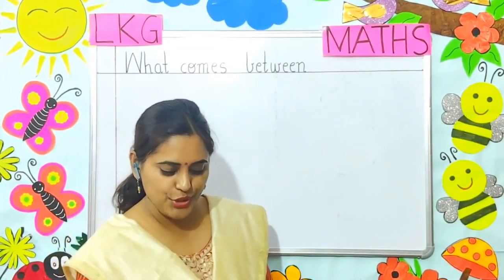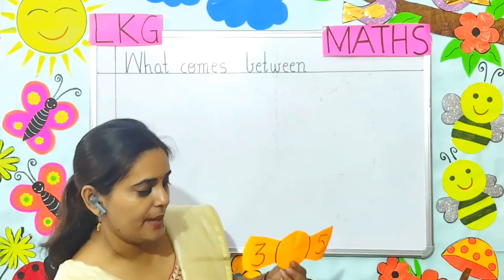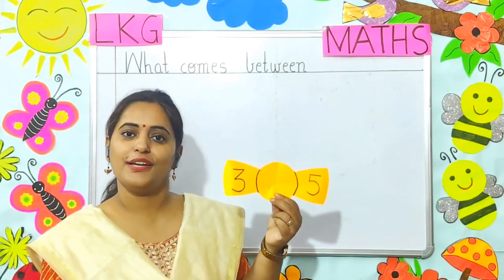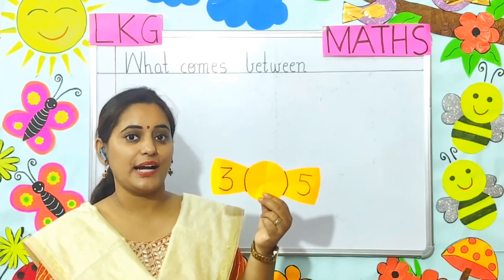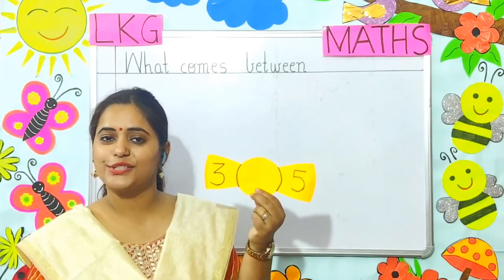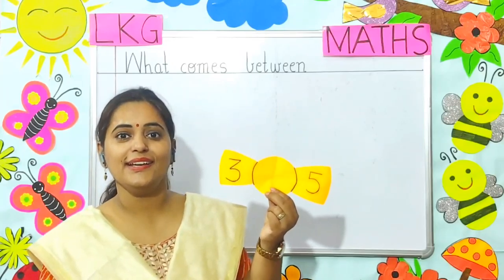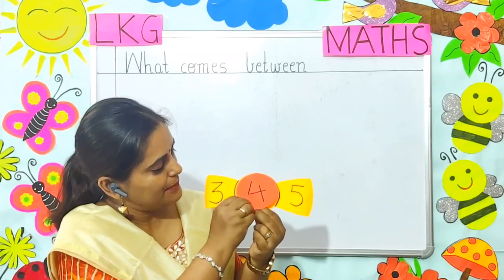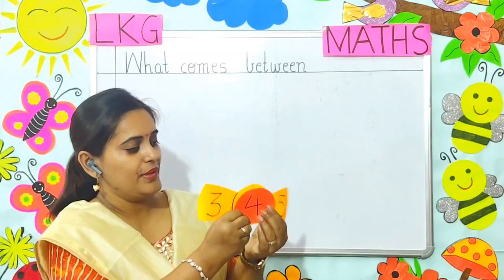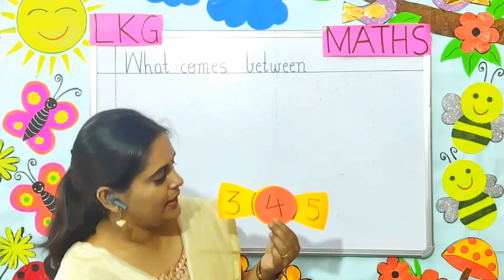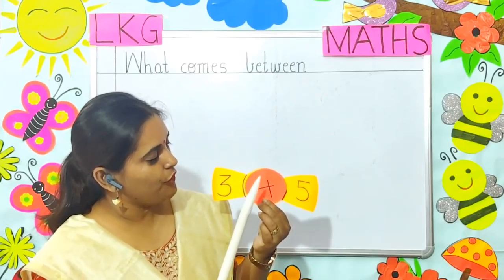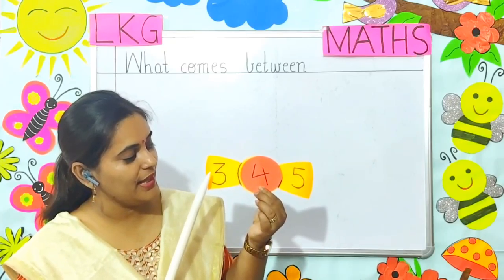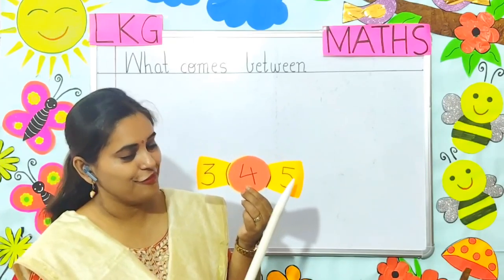Let me show you one more example. Here the numbers given are 3 and 5. So if you start counting, what number will come after 3? 3, 4. Yes, very good. So here the number 4 will come. So now if you read: 3, 4, 5 — so 4 comes in between 3 and 5.